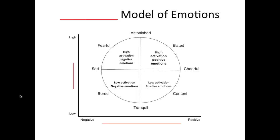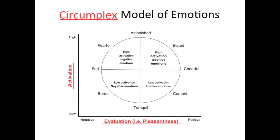Here we have what is called a circumplex model of emotions. We've arranged a variety of different emotions that human beings experience on the perimeter of a circle, organized along two axes. On the vertical axis we have activation, ranging from tranquil to astonished. The horizontal axis is called evaluation, or pleasantness, ranging from negative to positive. Sadness, boredom, and fear are negative emotions; elation, cheerfulness, and contentedness are positive emotions.